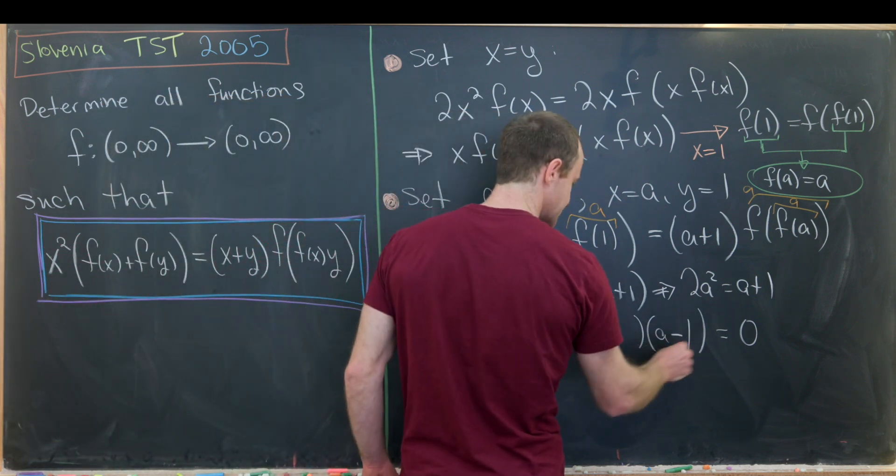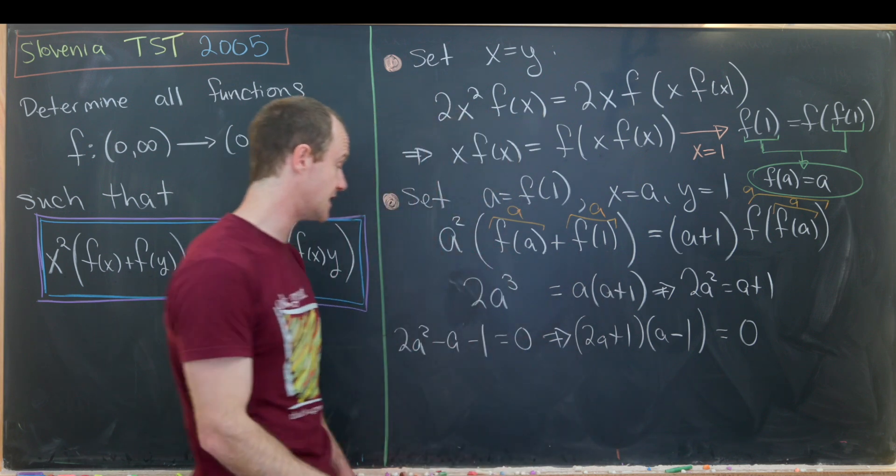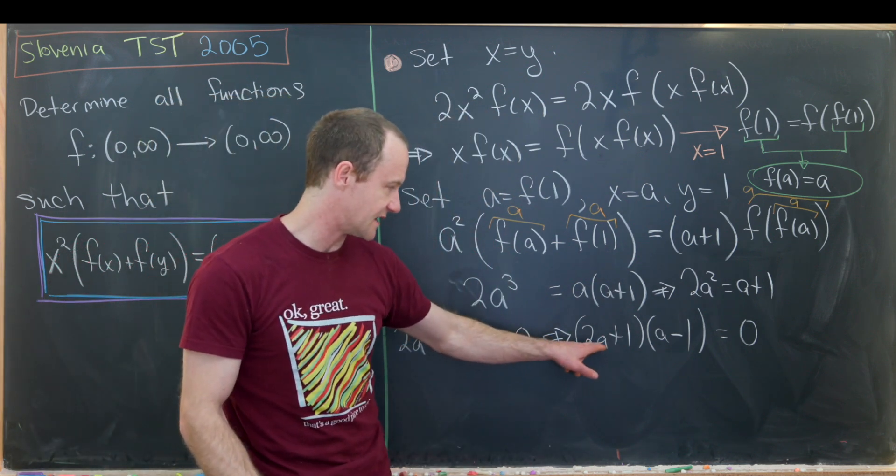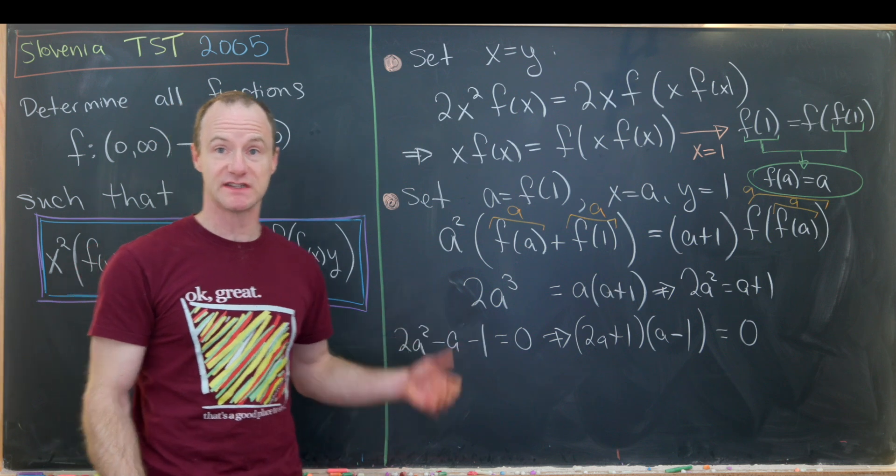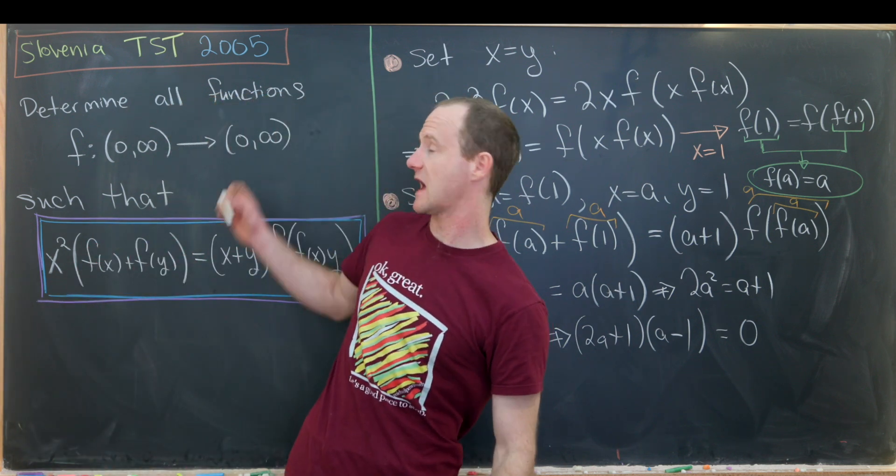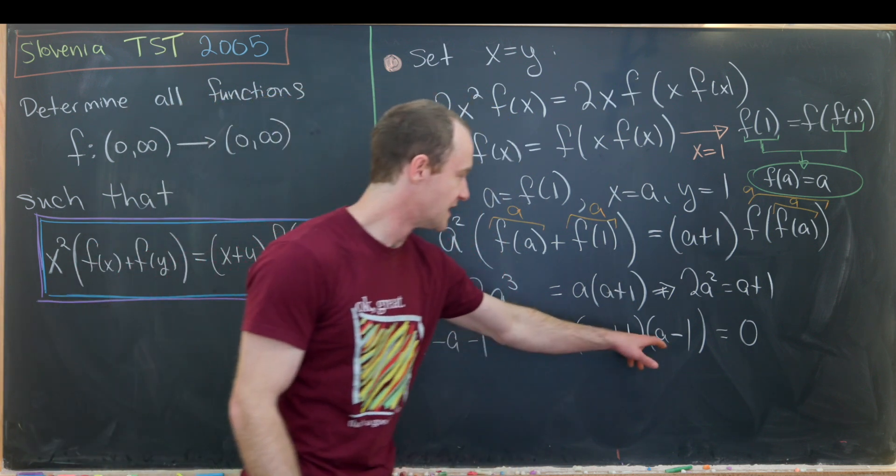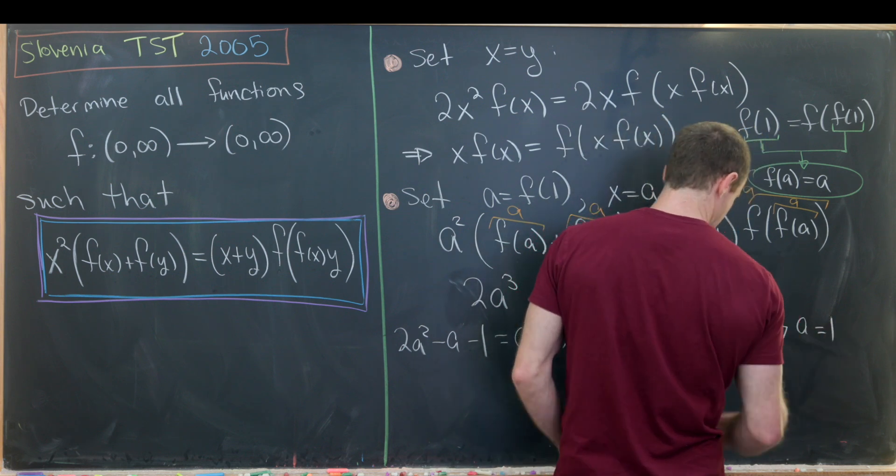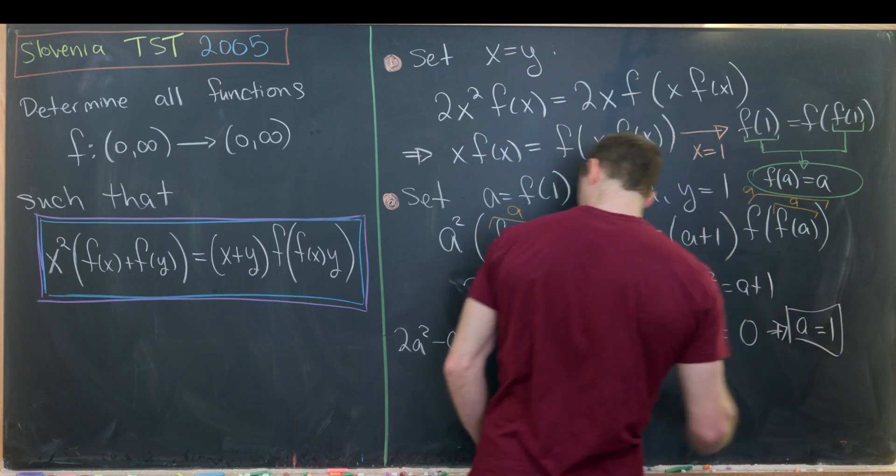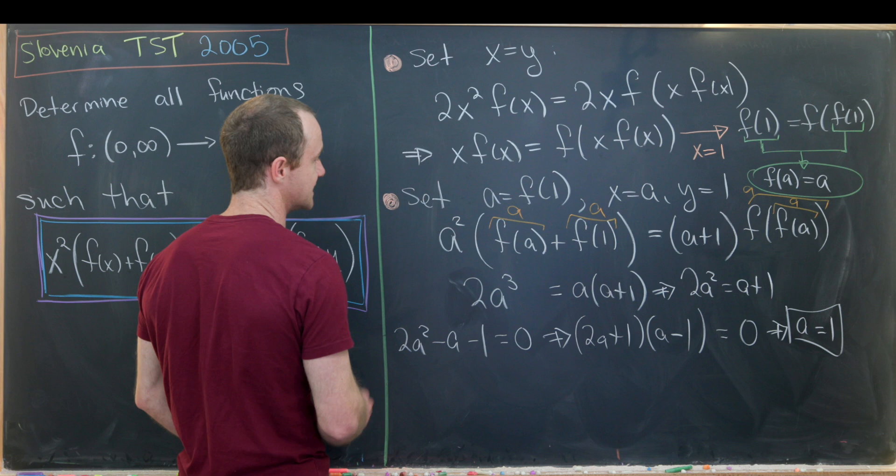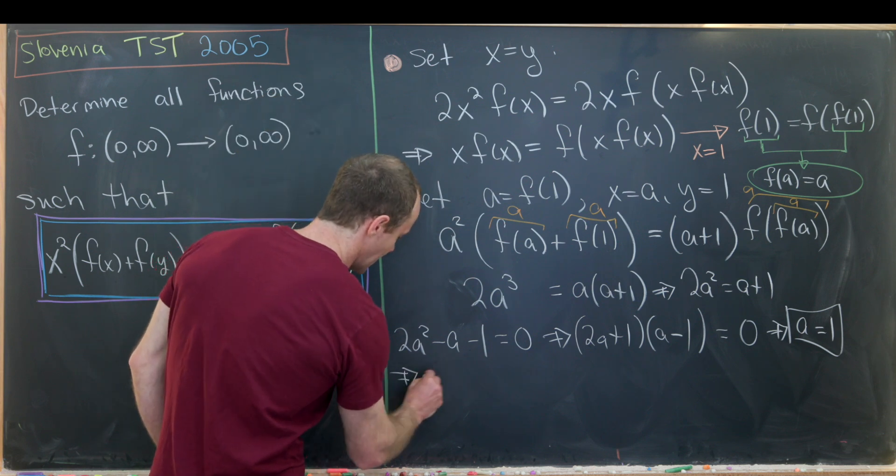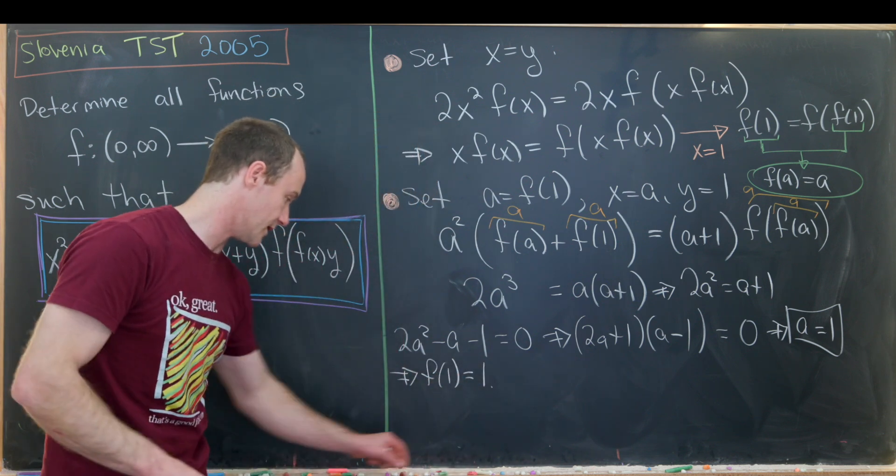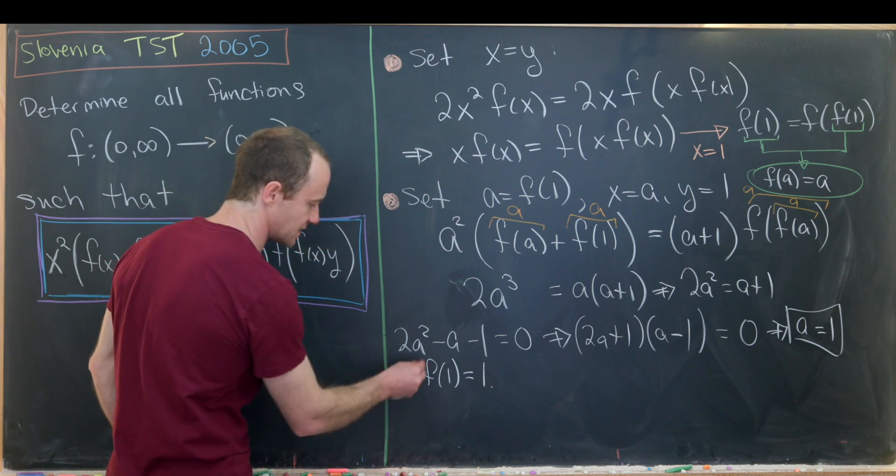We need a plus one for one and a minus one for the other. We'll need a minus one here and a plus one here in order to achieve this cross term. Notice this guy gives us a equals minus half, which doesn't make any sense because we know that a has to be a positive real number. This one gives us a equals one. So now we know that a equals one. So that's a good bit of information because that really means that we know that f evaluated at one equals one.